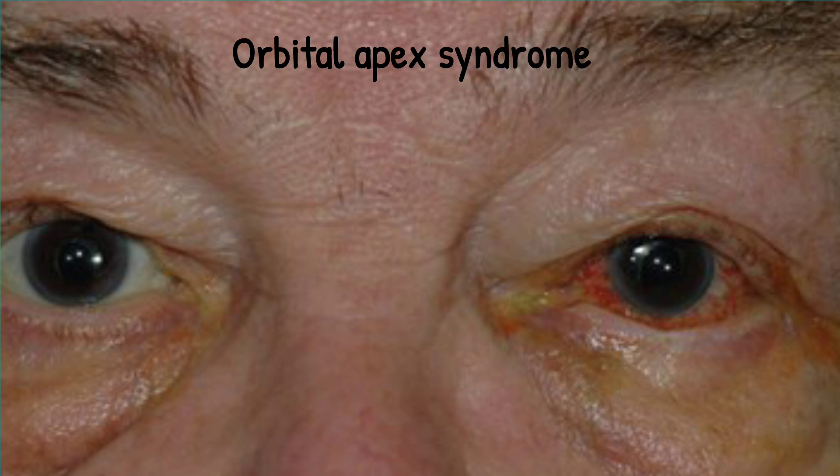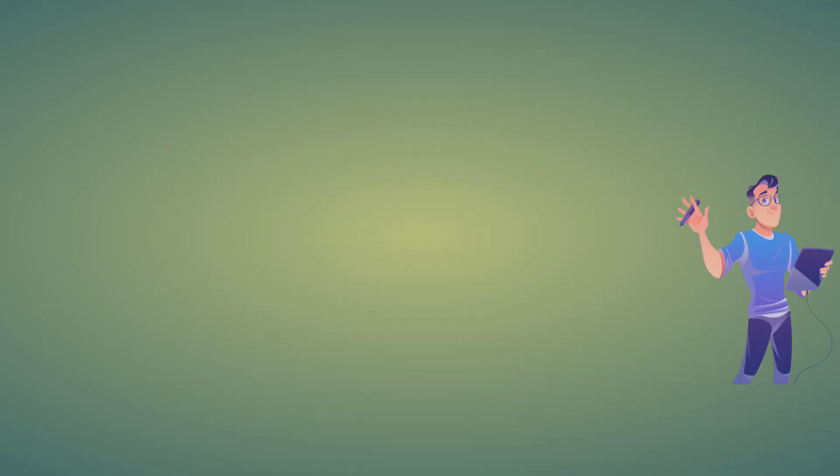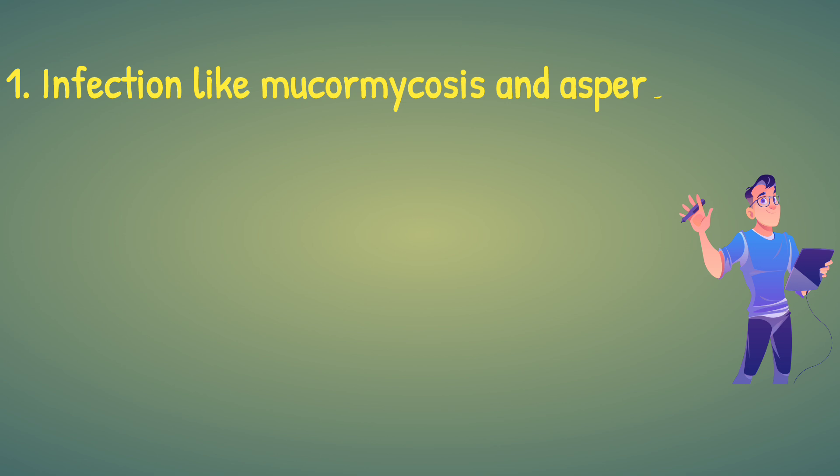This is how a patient with Orbital Apex syndrome looks. There is involvement of one eye — it may be protruded, it may be red and congested, and the eye will not be able to move in either direction.